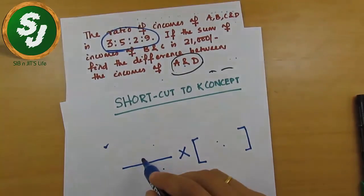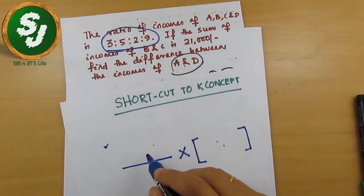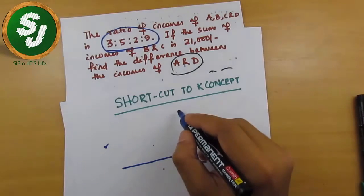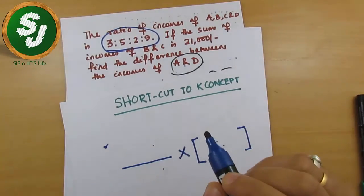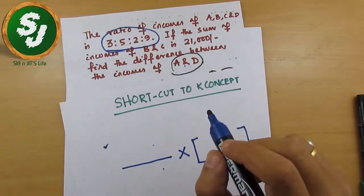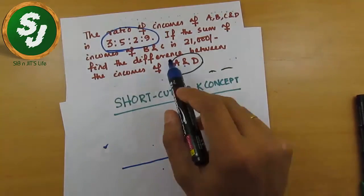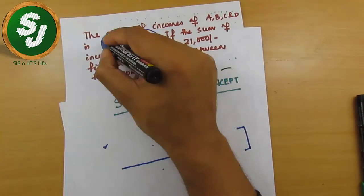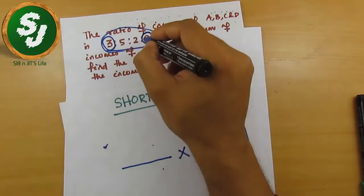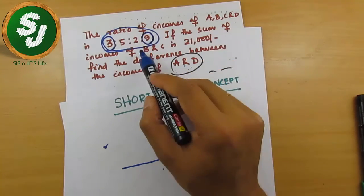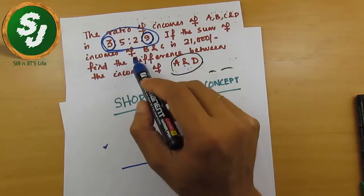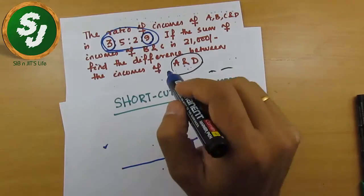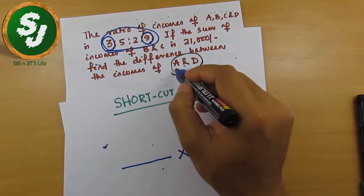On the numerator part you will write the ratio part of the question — whatever is asked in the question. Have a look: find the difference between the income of A and D. A was 3 and D was 9. The question is asking to find the difference between A and D, so you will write the ratio part of what is asked.